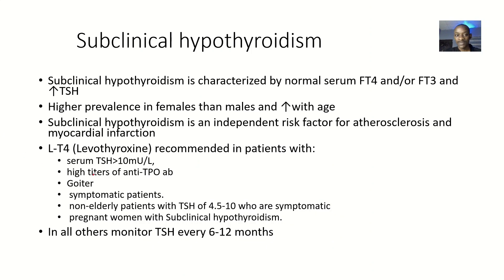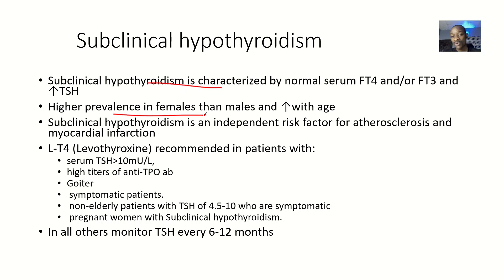Subclinical hypothyroidism is characterized by a normal serum T4 (thyroxine), and normal free T3 and T3 (triiodothyronine). It has a higher prevalence in females than in males, and its prevalence increases with age, meaning it mostly affects older individuals.